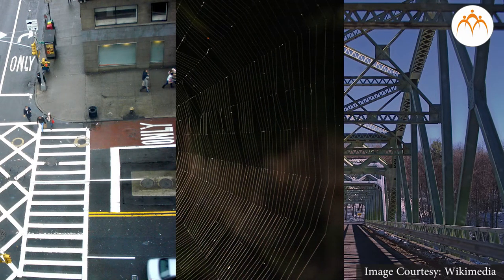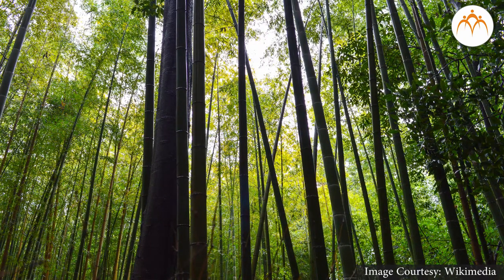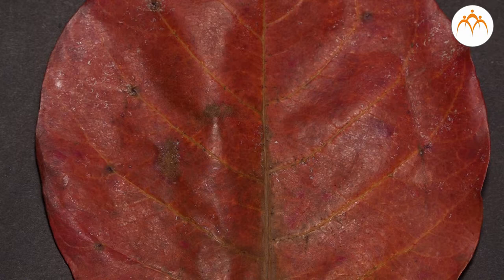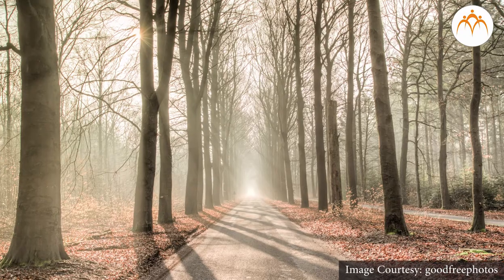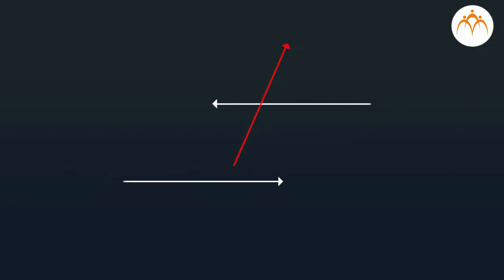We find many examples of a transversal cutting two intersecting lines in nature. Do we also find examples of a transversal cutting two parallel lines? Look at this picture of tree trunks — these represent approximately straight parallel lines cut by another tree trunk, which represents a transversal. On a leaf, there are multiple parallel lines represented by the leaf veins, which are cut by the main vein representing a transversal. Similarly, many tree trunks represent multiple parallel lines cut by many branches representing multiple transversals. We make purposeful use of this geometrical concept of parallel lines cut by a transversal in our day-to-day life.